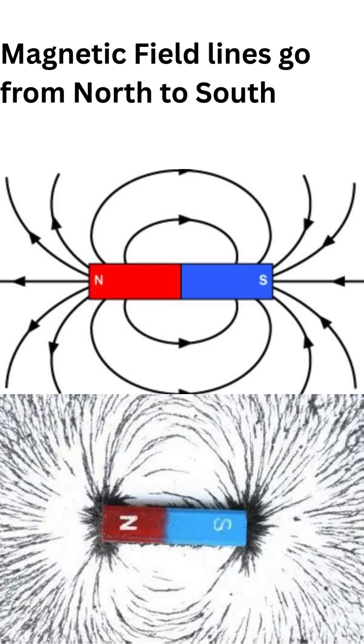Let's see the magnetic field in action. Put a magnet under a piece of paper. Sprinkle iron filings, tiny bits of metal, on top. Watch how they line up in cool patterns, those are the magnetic field lines.